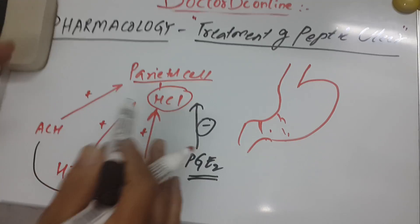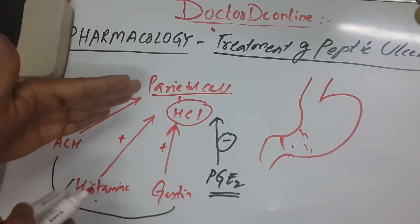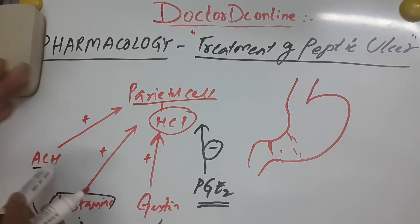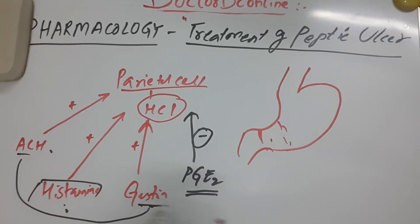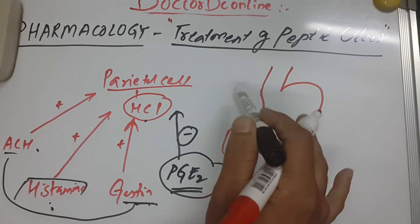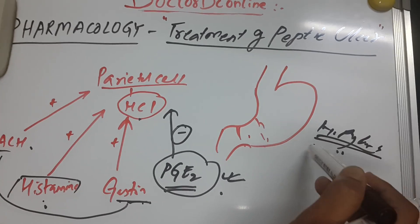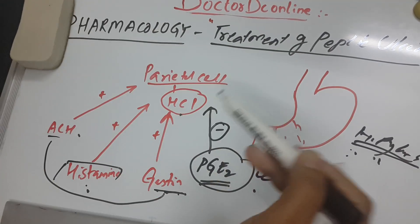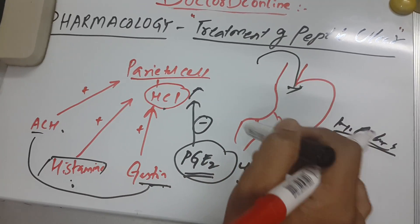Based on this, we can determine what drugs to give. Histamine is stimulating HCl production, so we give antihistamines. Acetylcholine is stimulating, so we give anticholinergic or antimuscarinic agents. Gastrin from G cells is stimulating, and prostaglandin is decreasing HCl, so we can give prostaglandin analogs. For H. pylori, caused by bacteria, we give antimicrobial agents or antibiotics.